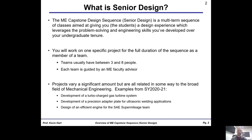So what is senior design? The ME capstone design sequence is a multi-term sequence, meaning you'll take this over multiple quarters, aimed at giving you a design experience that utilizes all of your undergraduate knowledge and problem-solving abilities. You'll work on one specific project for the whole year, or however many terms you decide to take it. Usually you'll work in groups of between three and eight people — four or five per group is most common — and every team is guided by an ME faculty advisor. The projects vary wildly.